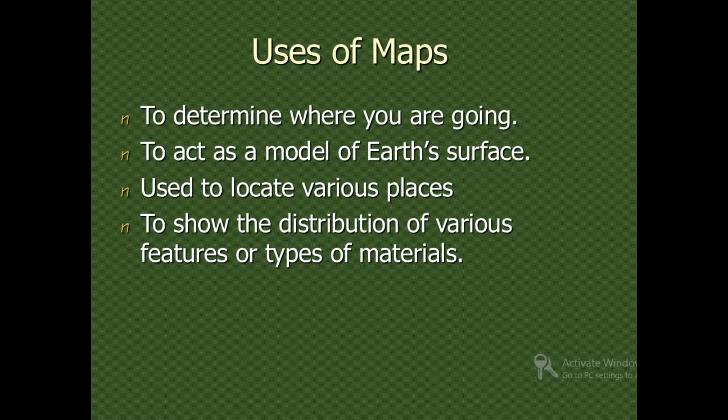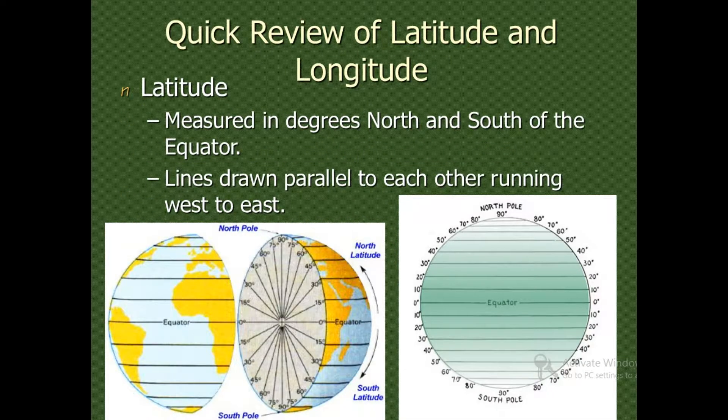There are two features of the Earth which are used for mapping any location on the Earth. They are latitude and longitude. Latitudes are measured in degrees north and south of the equator. Latitudes are lines drawn parallel to each other running west to east.